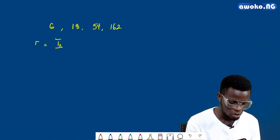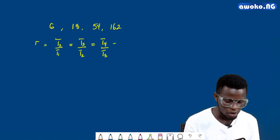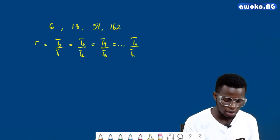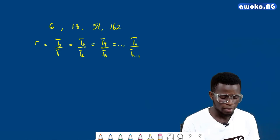The common ratio is denoted with the letter r, which is equal to the second term over the first term. It must be equal to the third term over the second term, which must be equal to the fourth term over the third term, and if we have more terms it must be equal to tn over tn minus one. If they all give the same value, we conclude that the sequence is a geometric one.